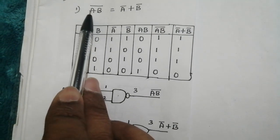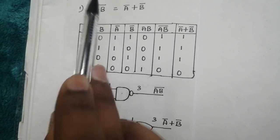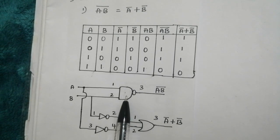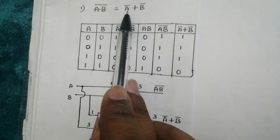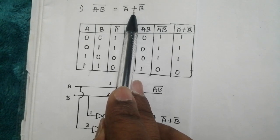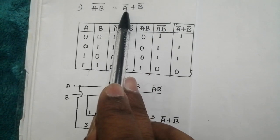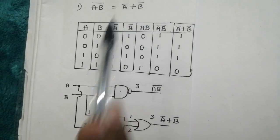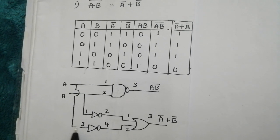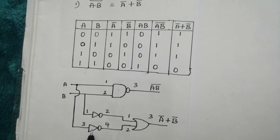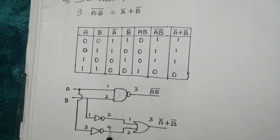Here we have AB whole bar, so that can be constructed by using one NAND logic gate. Next we have A bar logical OR operation with B bar. So first I should get A bar. So take the connection from input A and supply it to NOT logic gate, so that I will get A bar at this point.